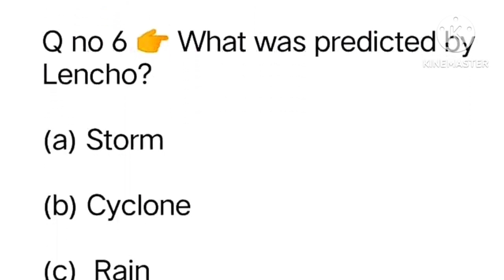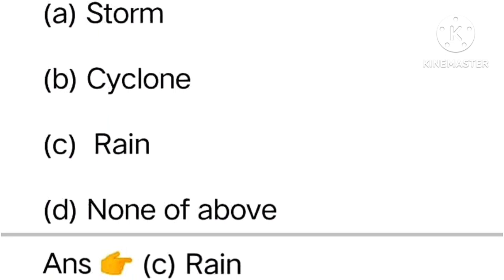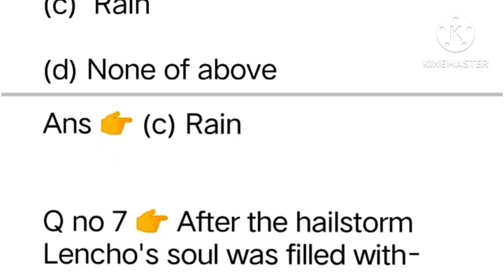Question six: What was predicted by Lencho? Storm, cyclone, rain, none of above. The answer is rain.